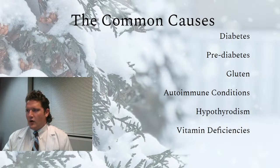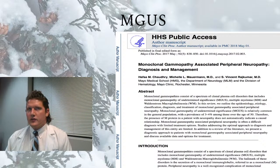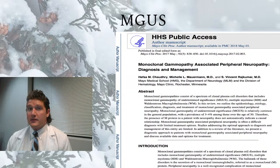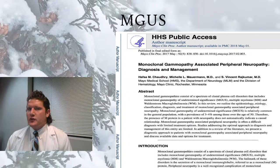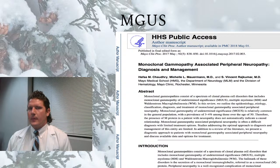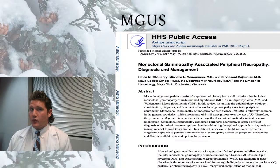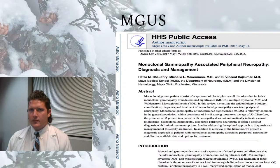So for our first uncommon cause of peripheral neuropathy, we're going to talk about monoclonal gammopathies of undetermined significance — MGUS. MGUS is a group of conditions involving the bone marrow. In fact, about three to four percent of the population over age 50 will start producing abnormal proteins or abnormal immunoglobulins.